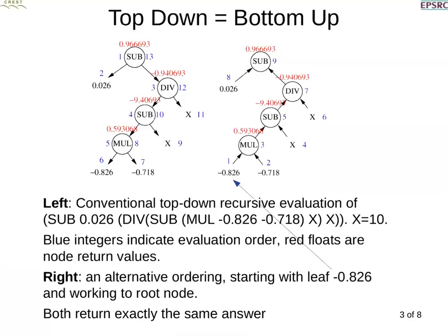On the left hand side we have a tree being evaluated in the conventional top-down recursive fashion, and on the right hand side the same tree being evaluated from the bottom up. On the left hand side we start with the subtraction node at the top, evaluate its first leaf 0.026, then need its second argument which is the division node, and we recursively evaluate down until we've evaluated the whole tree. But we can get exactly the same answer if we start from anywhere else in the tree.